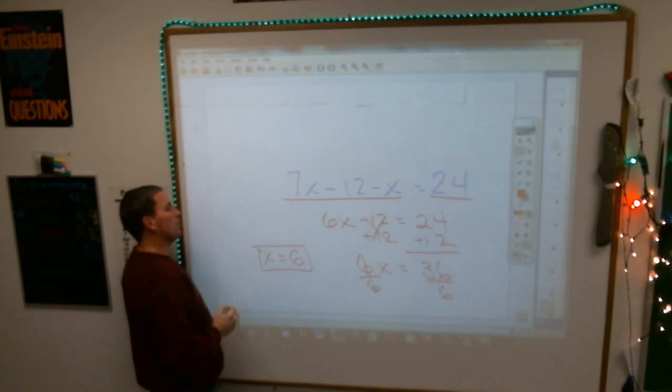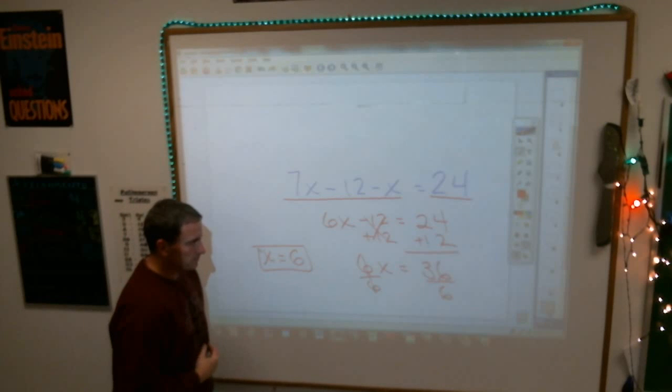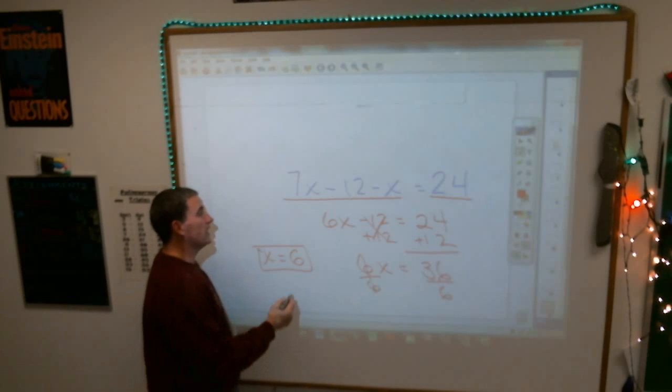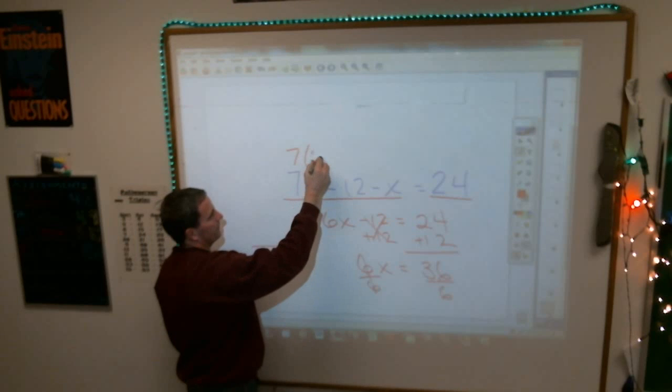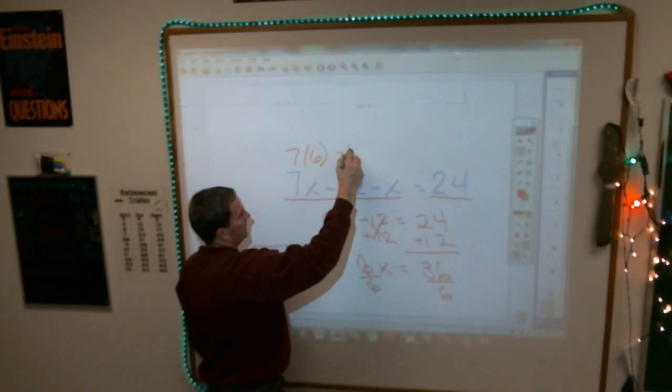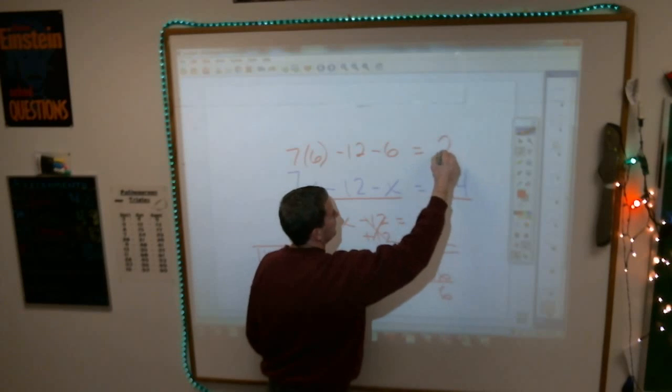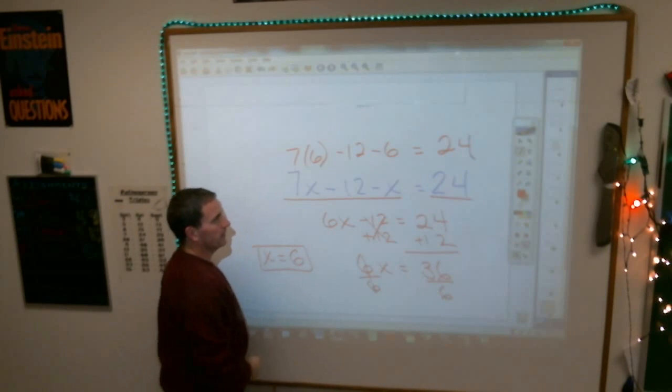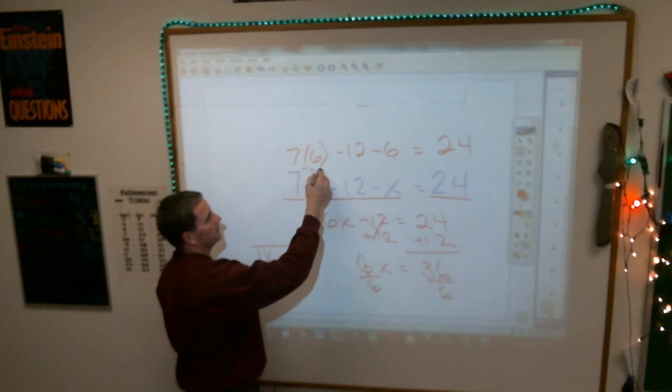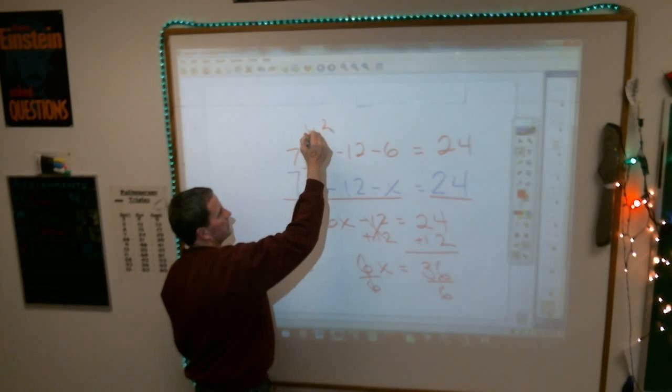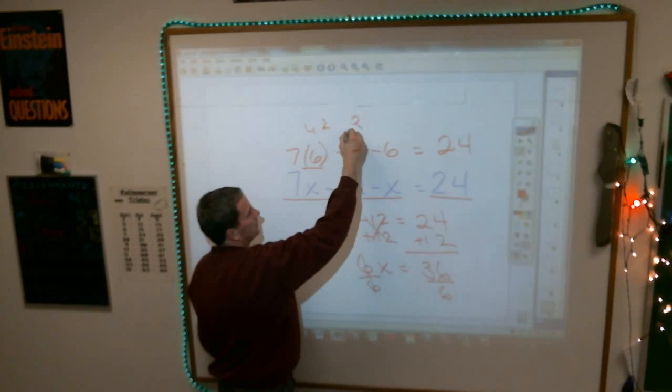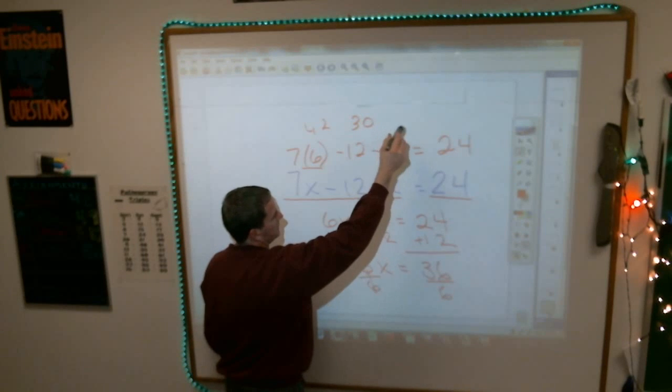And I'm sure you're all wondering, does that really work? Does 7 times 6 minus 12 minus 6 equal 24? That's what we're trying to figure out what the letter x is. Well, 7 times 6 is 42. 42 minus 12 is? 30. 30 minus 6 is 24.